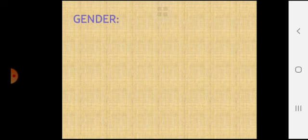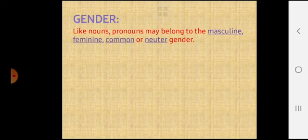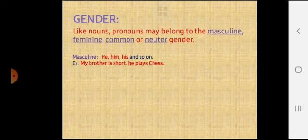Next, we will study gender. Like nouns, pronouns may belong to the masculine, feminine, common or neuter gender. Masculine includes the words he, him, his and so on. For example, my brother is short. He plays chess. Pronoun he is used for the word my brother. Brother is a masculine gender. So he is also a masculine gender.